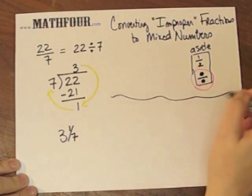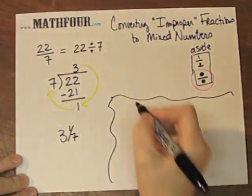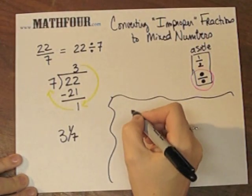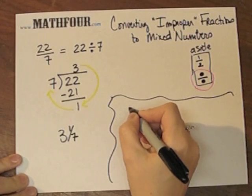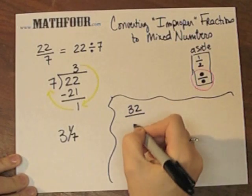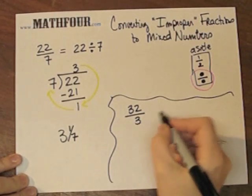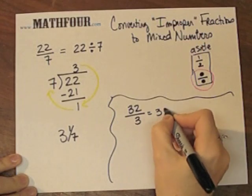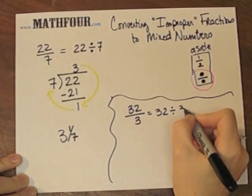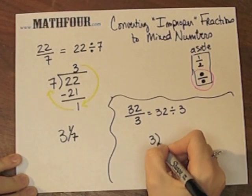So let's take another example, since we have some more space. Let's say 32 over 3. This means 32 divided by 3. So I can take 3 into 32.